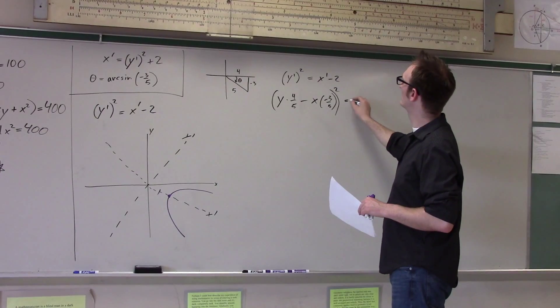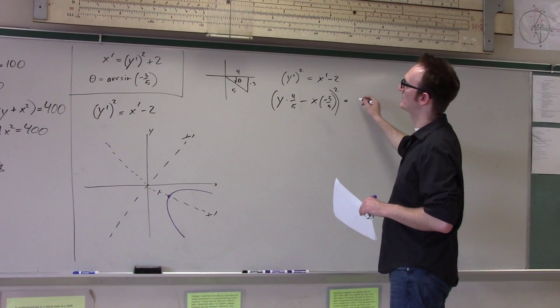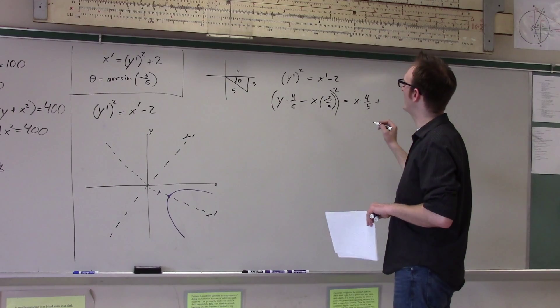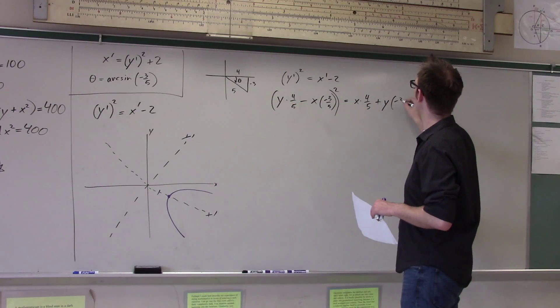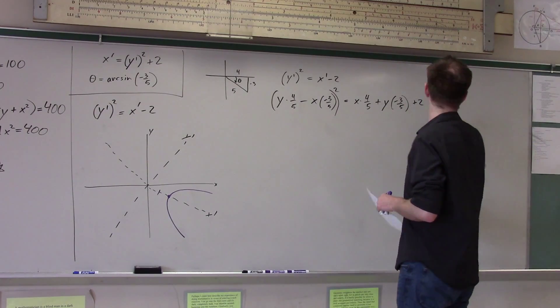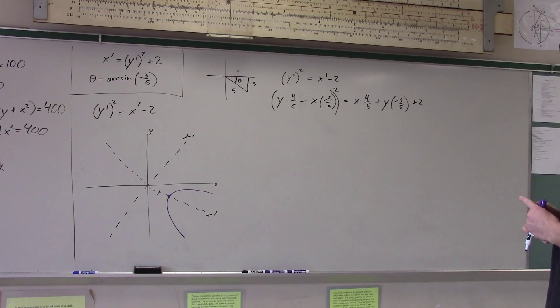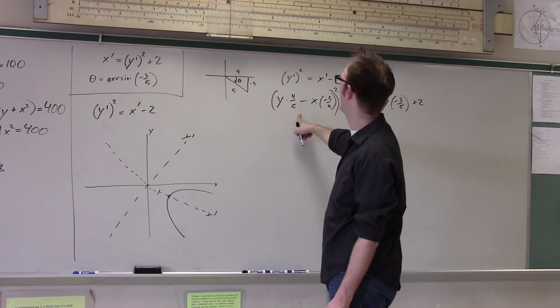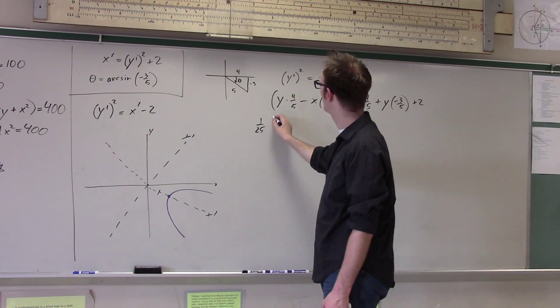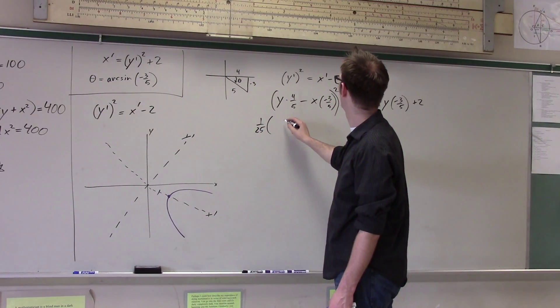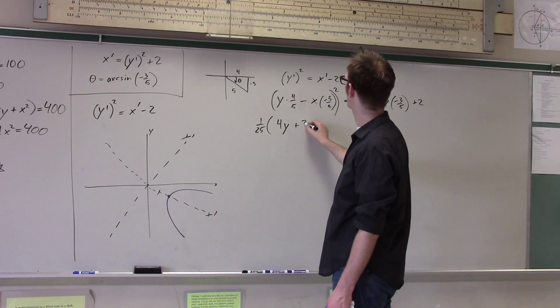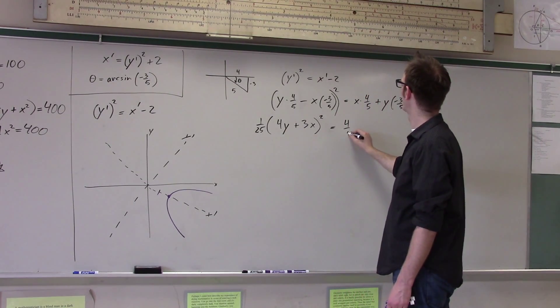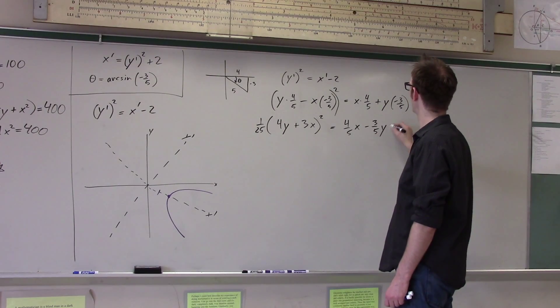So it's that squared equals x-prime, which is x cosine theta, so that's x times 4 fifths, plus y sine theta, so that's y, and sine theta is negative 3 fifths. And all of that, plus 2. Cool. And now I just expand this whole thing out. Again, it's probably worth it to factor out a 1 25th. So I get 1 25th, this is basically 4y plus 3x squared equals 4 fifths x minus 3 fifths y plus 2.